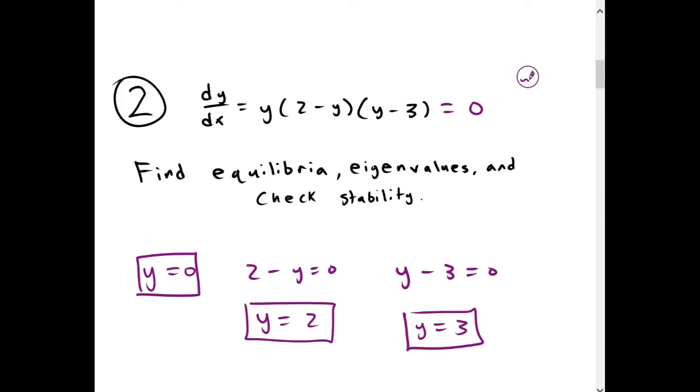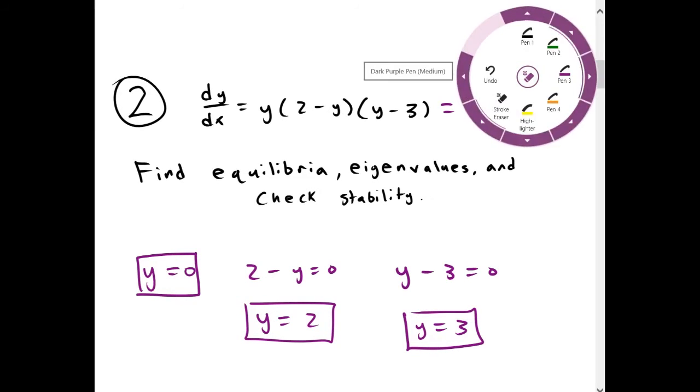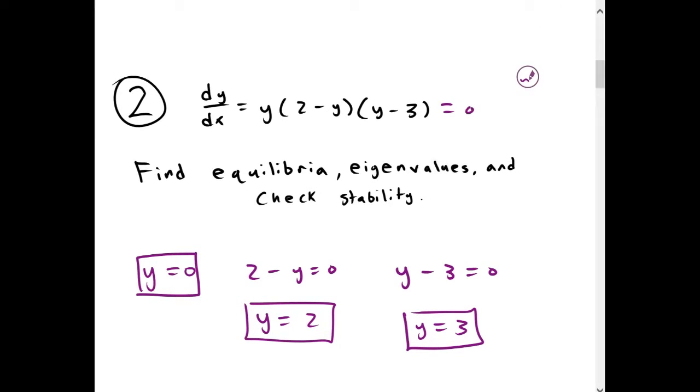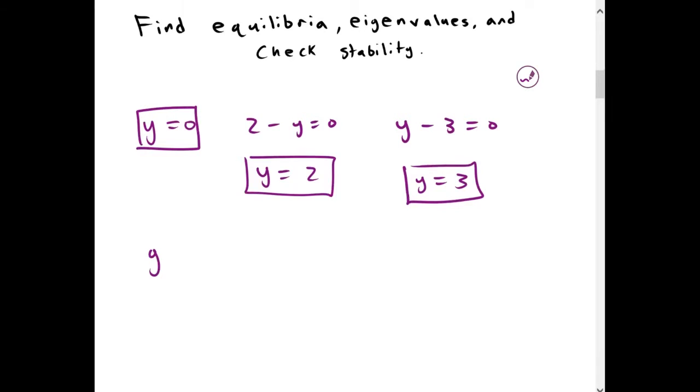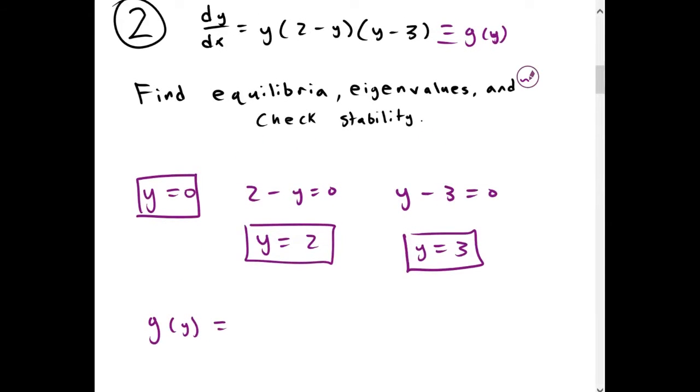So to find the eigenvalues, we're going to set dy/dx equal to g(y). So we're going to define this to be g(y). And then we're going to find g'(y). So first, we're going to multiply out g(y).